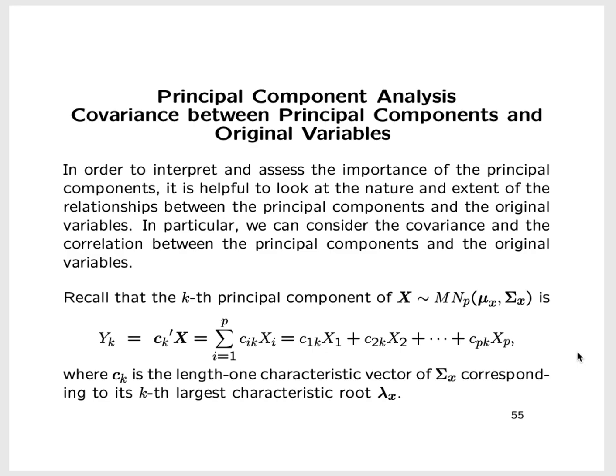The covariance and the correlation give us a way to measure the strength of the linear relationship between two variables. The correlation has the advantage over the covariance in that its value does not depend on the unit of measurement. So what we're going to do is come up with formulas for the correlation between a given principal component and a given original variable, then calculate that correlation and try to interpret what the principal component is measuring.